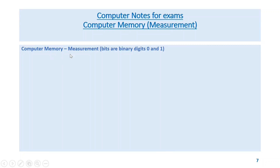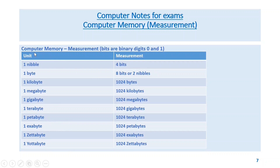Measurement of computer memory: bits are binary digits — that is, 0 and 1. One nibble is four bits; one byte is eight bits or two nibbles.